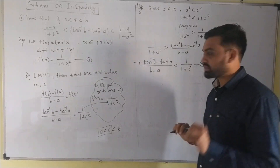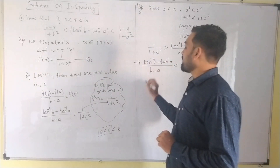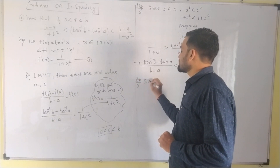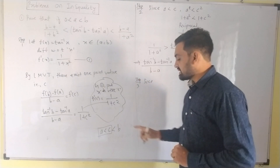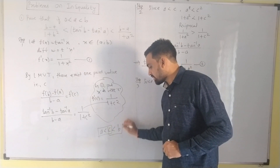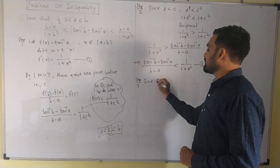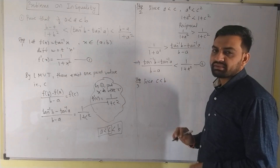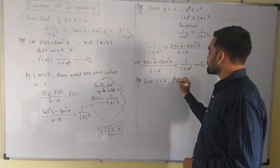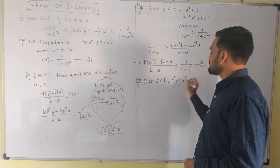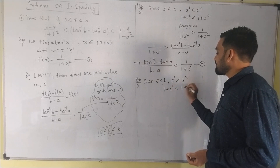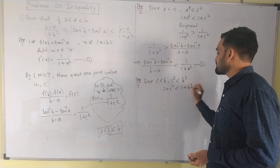Equation number 2. Step number 3. Since A less than C, and C less than B. If you square it, C square is less than B square. Adding 1: 1 plus C square is less than 1 plus B square.